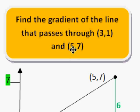Here we go, we're going to find the gradient of a line. This line passes through these two coordinates. What does gradient mean? It just means steepness. We're going to see how steep this line is.